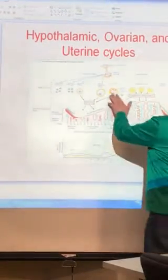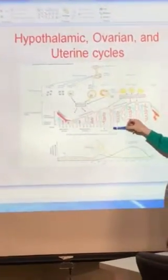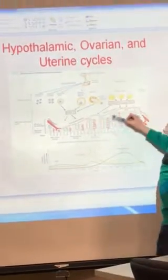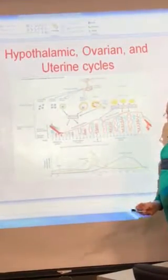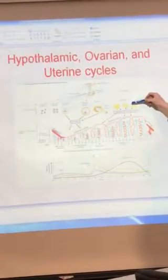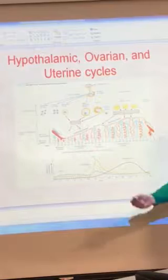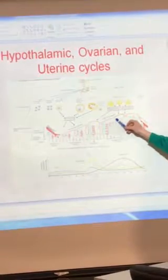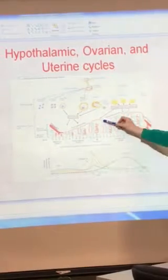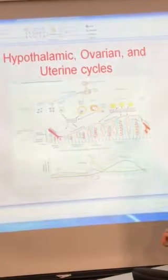Now, once you have that egg cell ovulate, here we are, day 15 to 17, somewhere in here, and now you have about 10 days that the corpus luteum is going to be functional, producing progesterone and estrogen to maintain and develop the uterine lining. So it's going to be at its maximum out here towards the end of this.